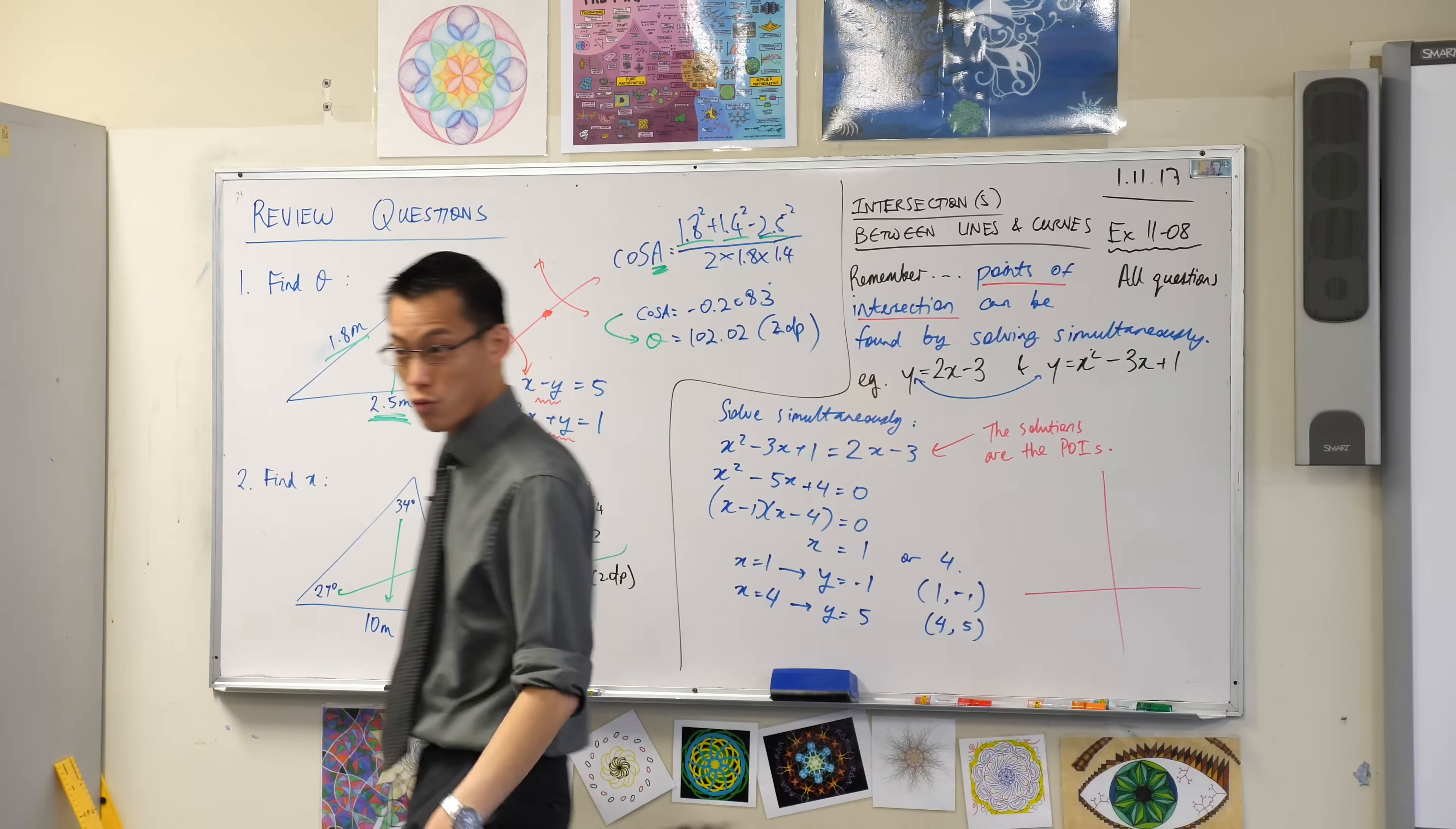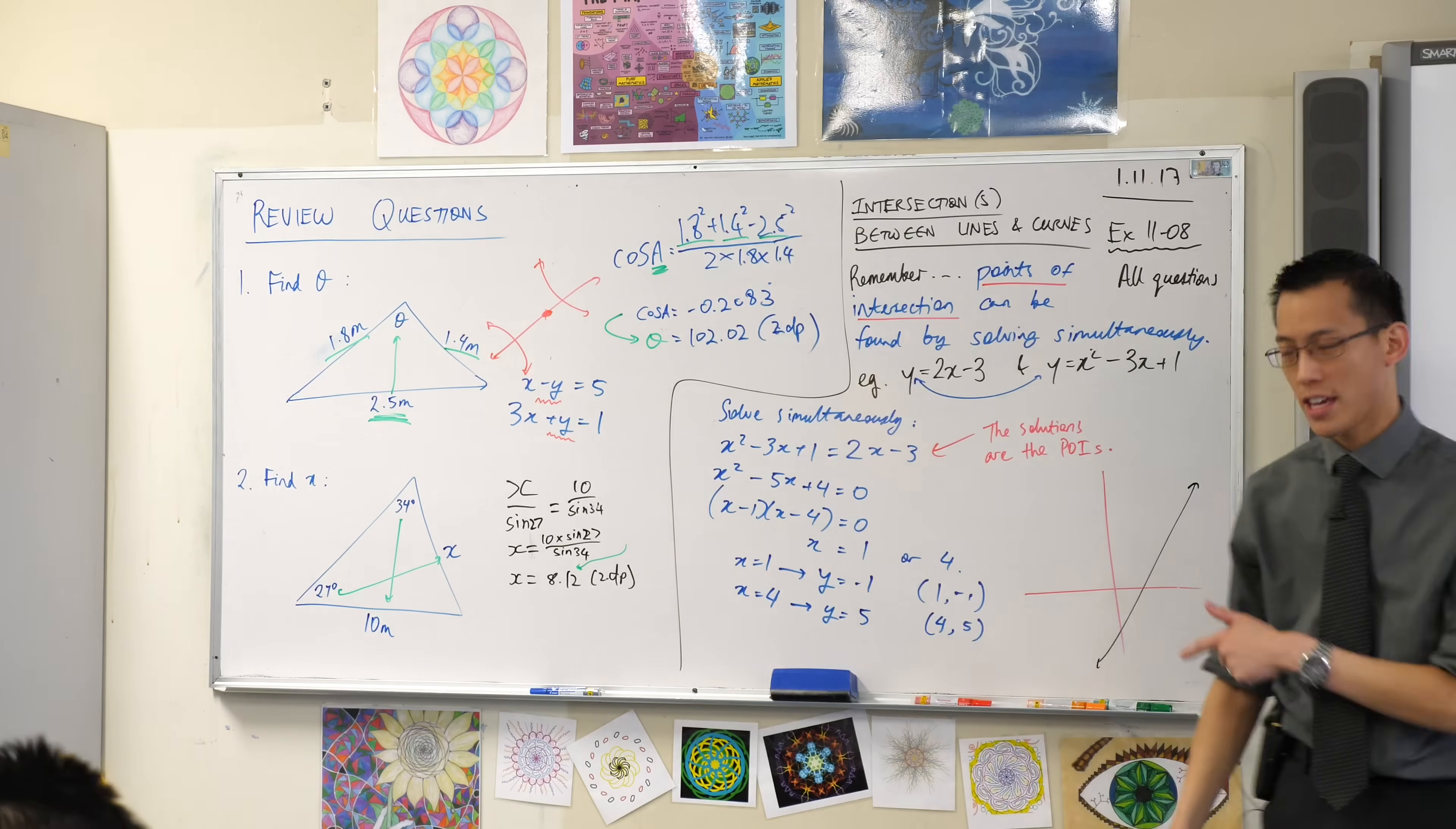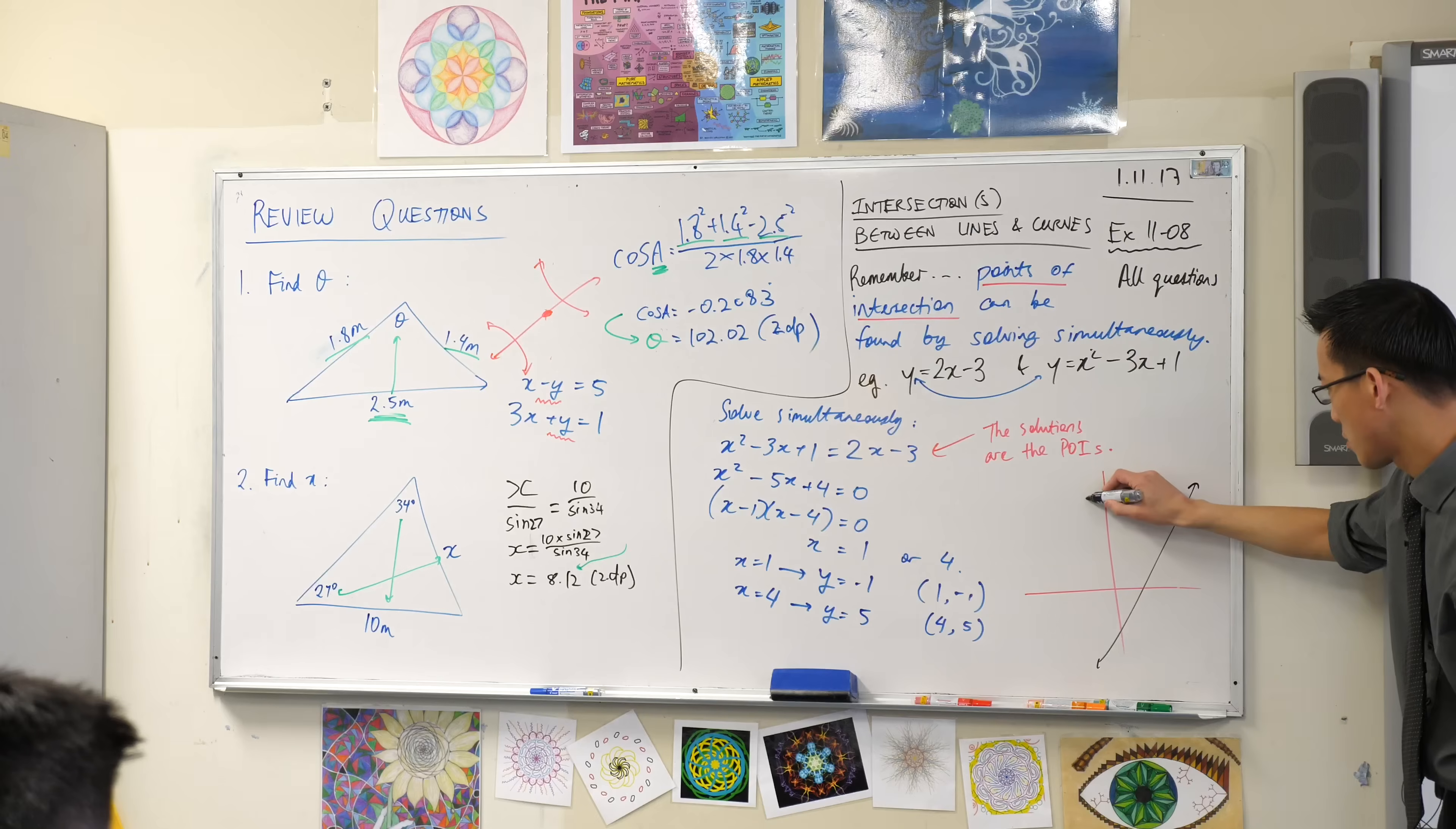Now, what do these roughly look like? I just want a general sense. y equals 2x minus 3 is a steep line, sort of like that. If I think about the parabola, if I went and did the work on this, or you can put it into Desmos and see what it looks like, you're going to get something that looks like this.